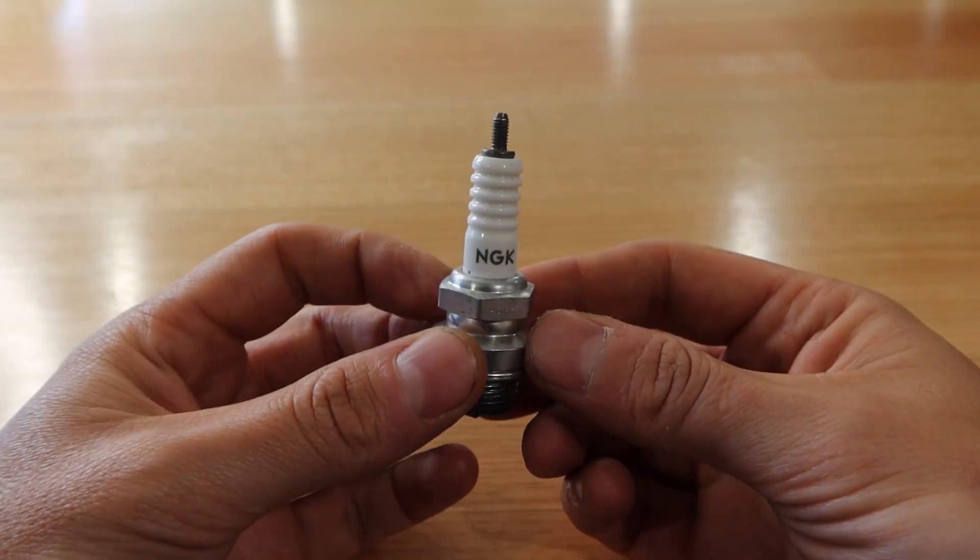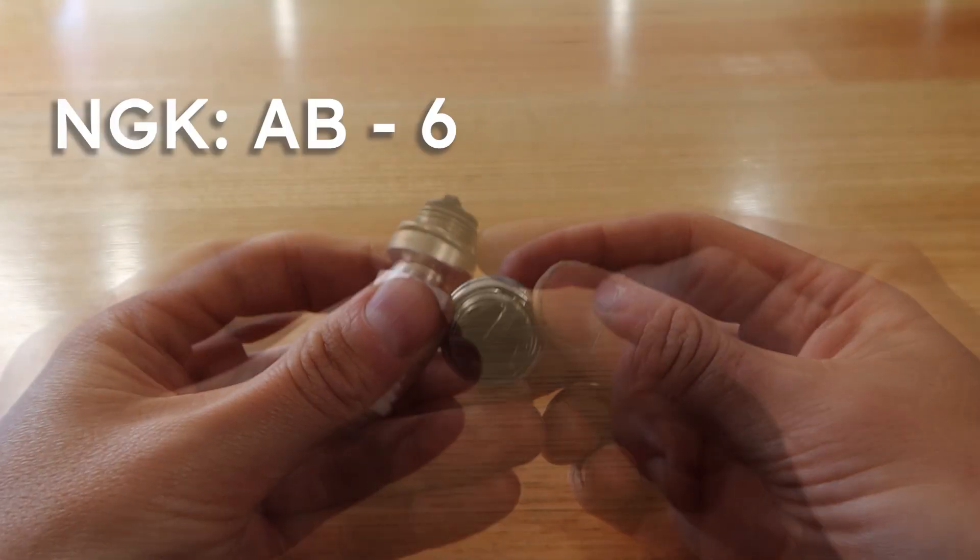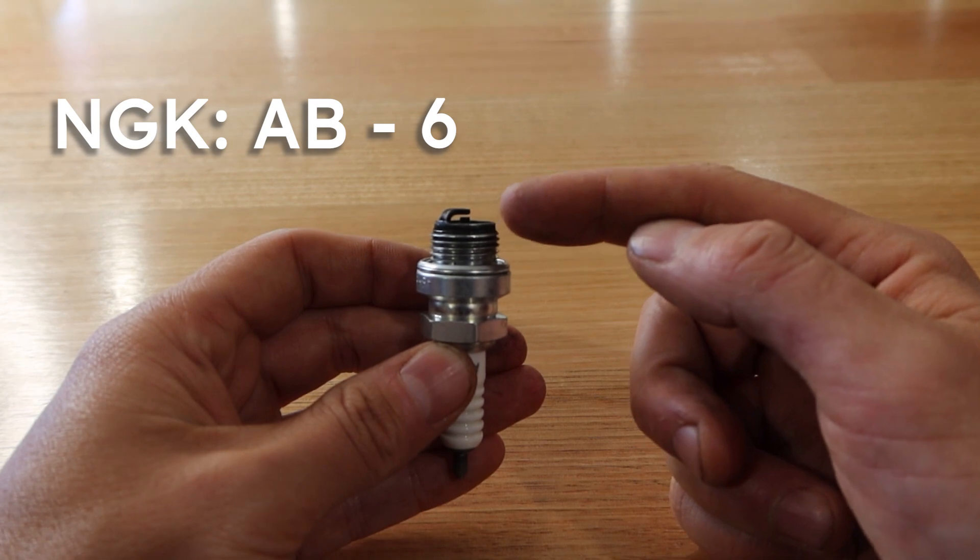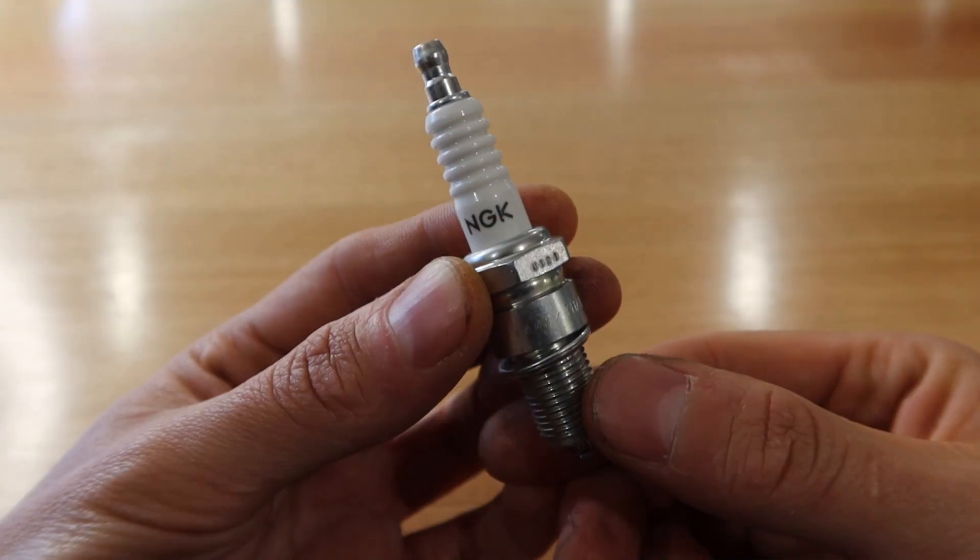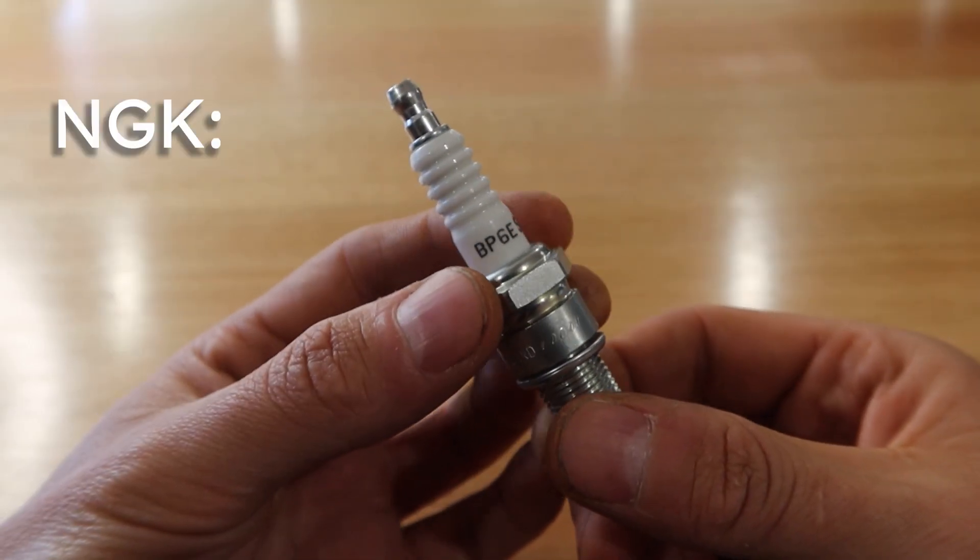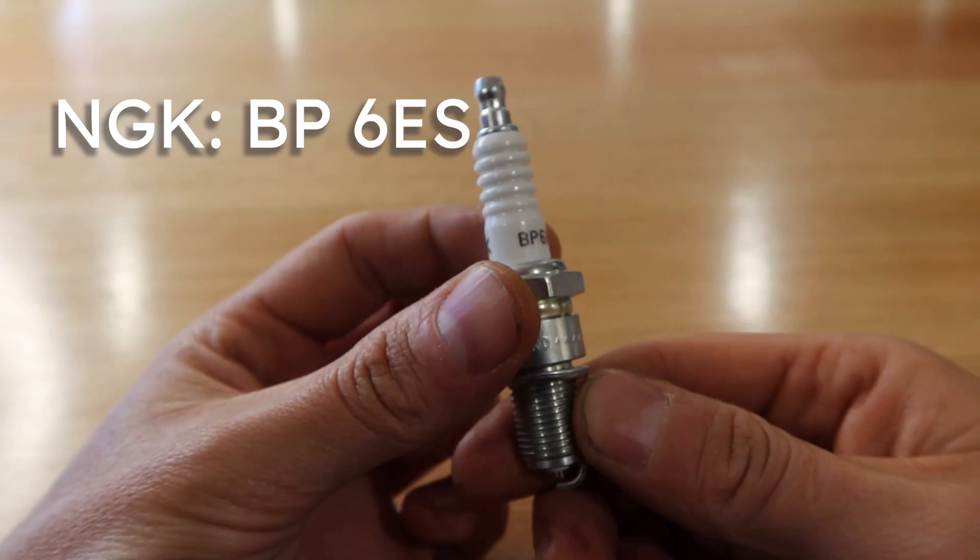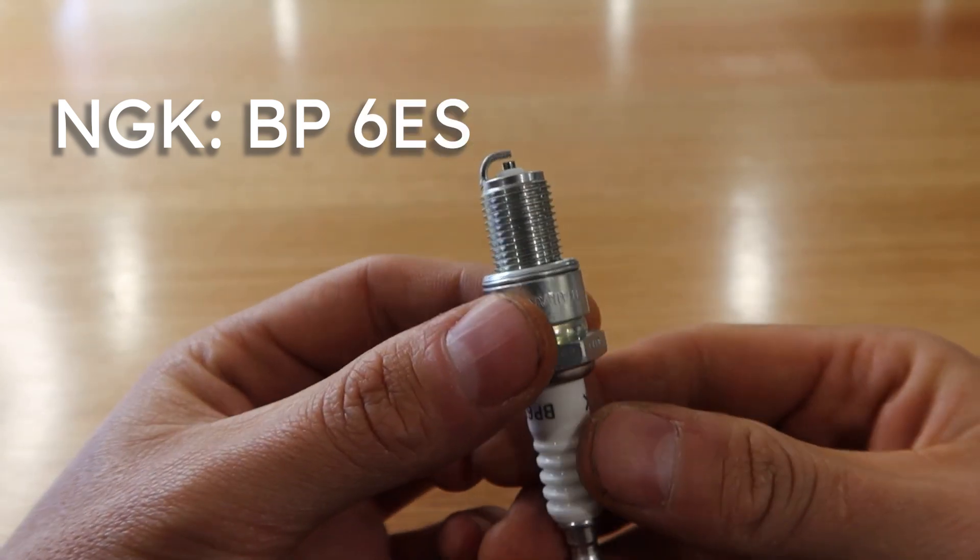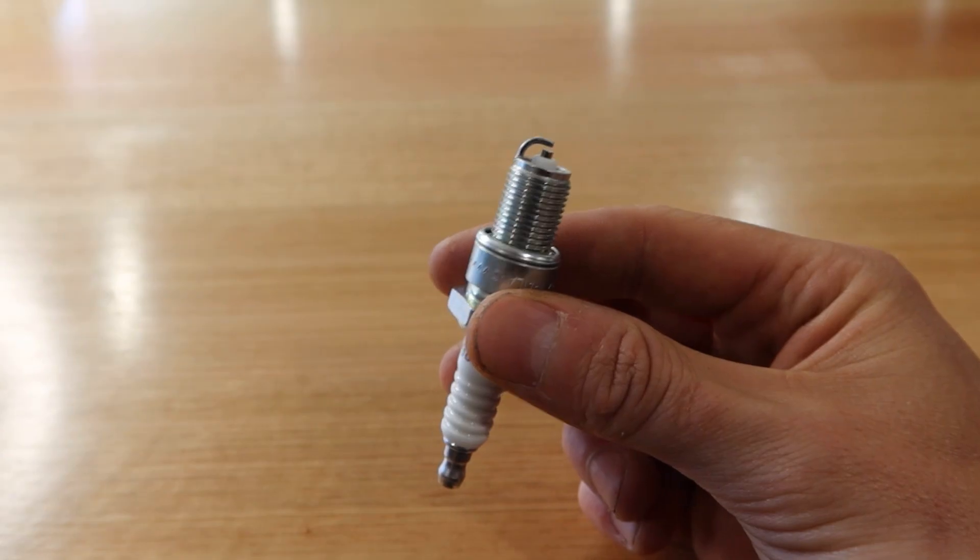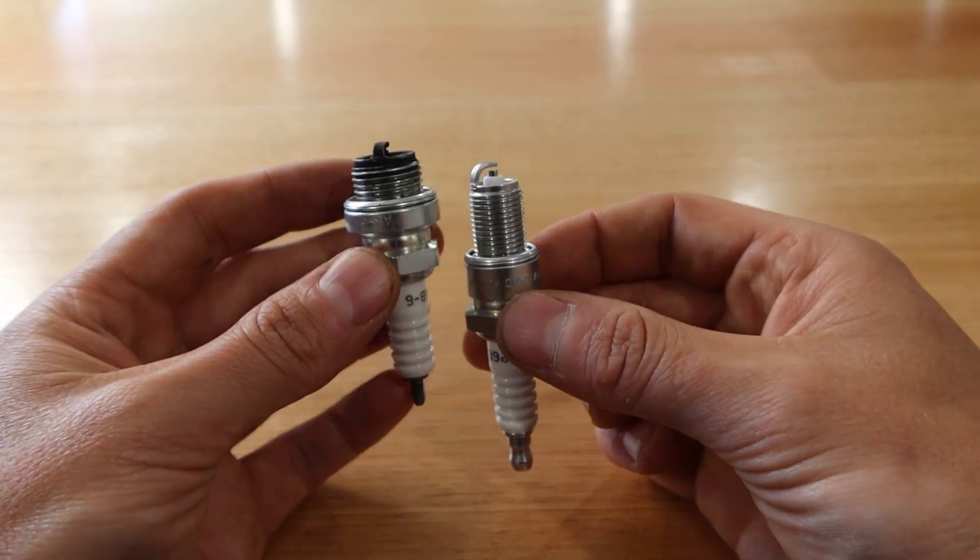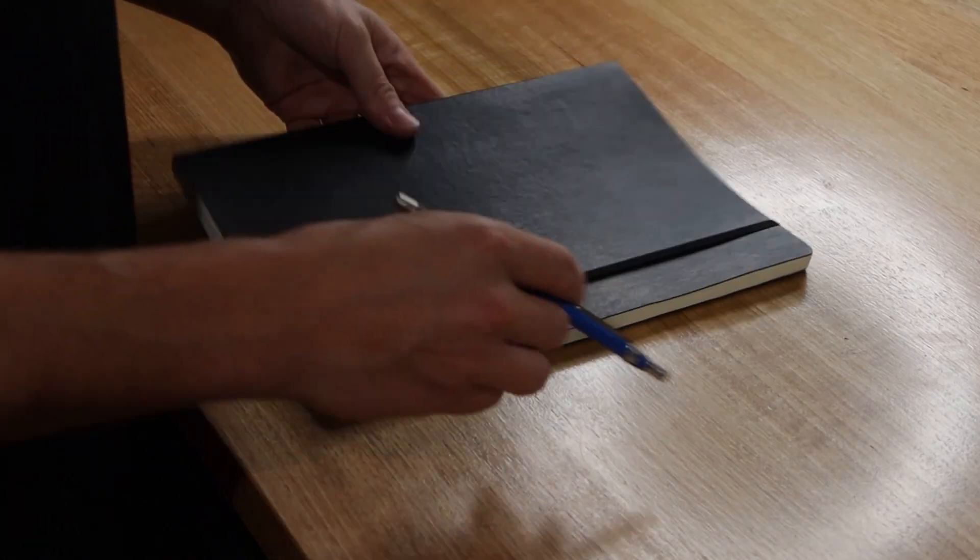These are the plugs they're currently using: NGK AB-6 with an M18 external thread. These are the plugs they'd like to switch to: NGK BP-6ES with an M14 thread. You can see the first issue - both plugs have very different lengths. We need an adapter. So what are our considerations?